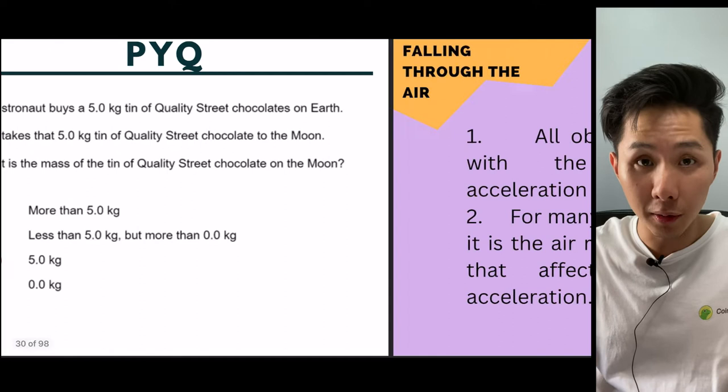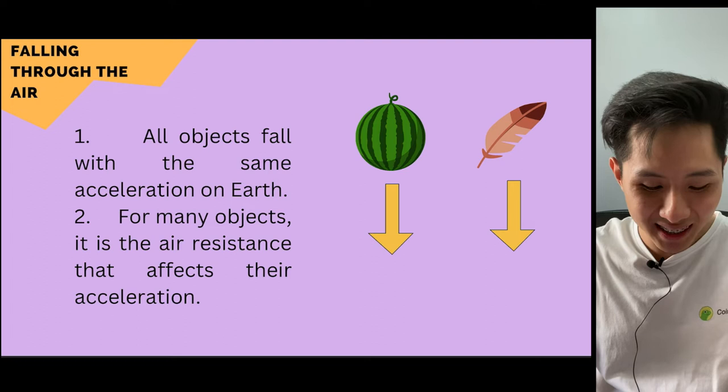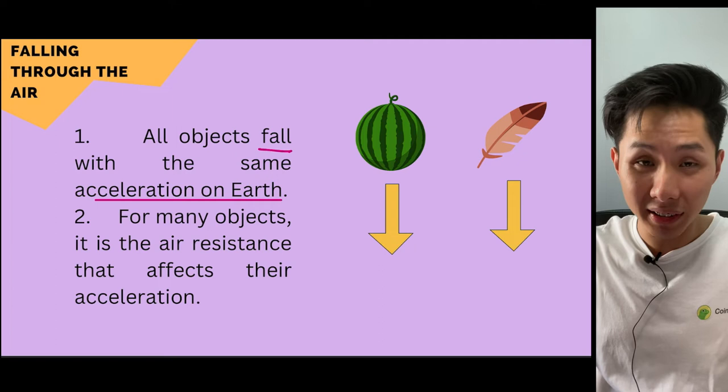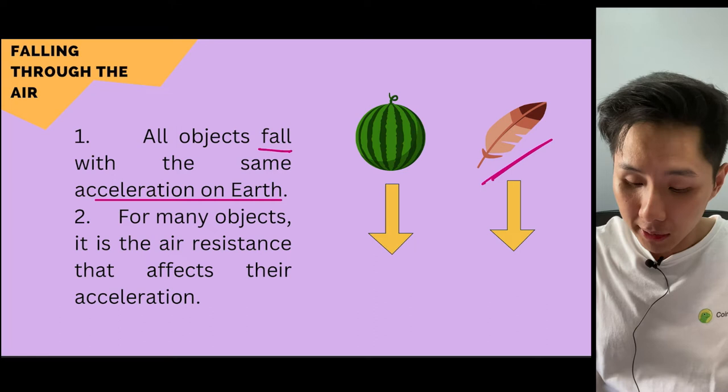Let's look at the sub-subtopic: falling through the air. All objects fall with the same acceleration on Earth. But a watermelon falls faster than a feather — not because gravitational acceleration is different, but because the air resistance overcome by the feather is greater.